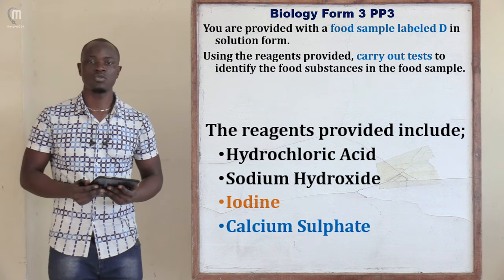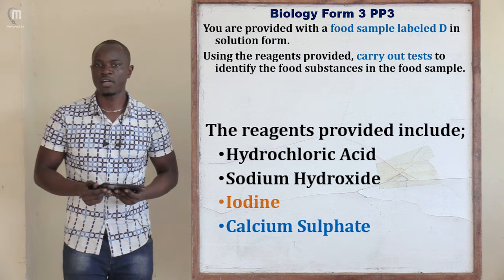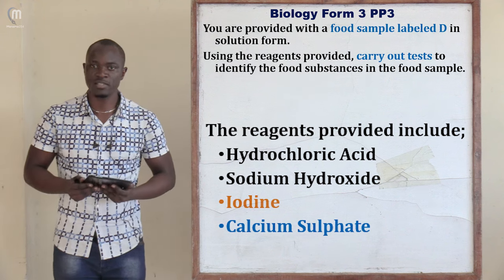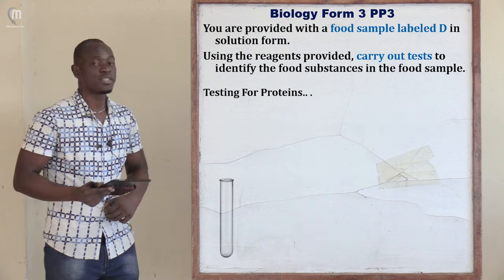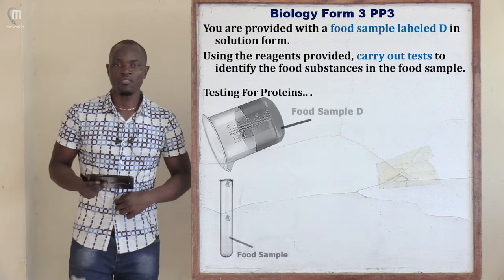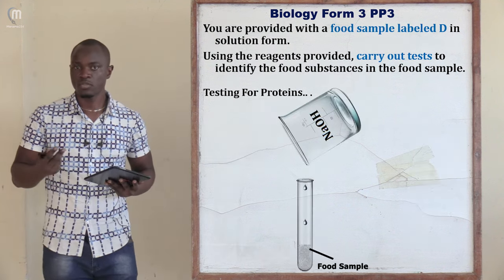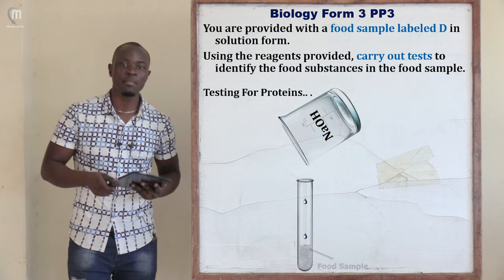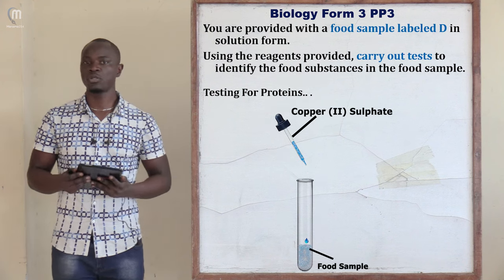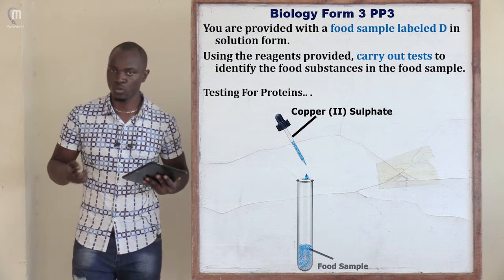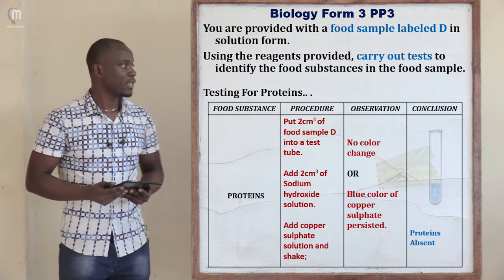The reagents provided are hydrochloric acid, sodium hydroxide, iodine, and calcium sulfate to perform the different food tests. For proteins, first put 2 ml of food sample in a clean test tube. Then add 1 ml of sodium hydroxide solution, followed by 1 ml of copper 2 sulfate solution. That is the procedure for the protein test.